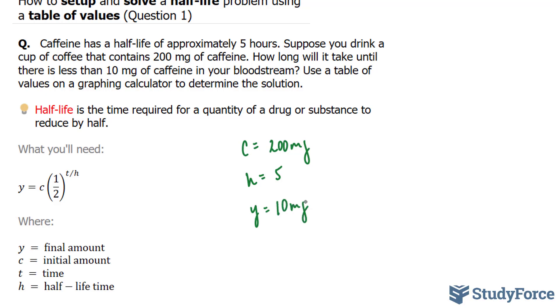What they want us to do is find out how long it will take for 200 to reach 10. So let's set up a table of values, and notice that y here is representing our dependent variable, and our independent variable is c.